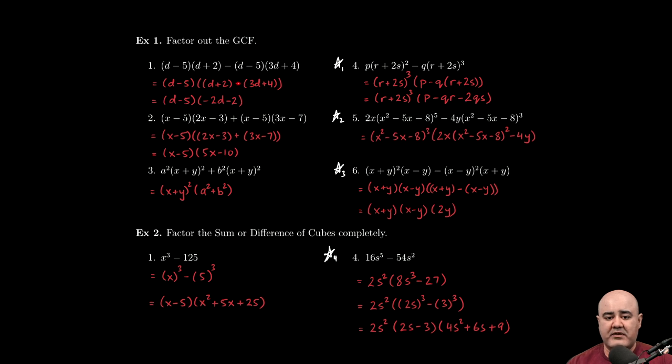Now again, just like we did in the previous problem, we distributed the negative. Here, if we distribute the sum, nothing's really going to change. 2x + 3x will yield 5x. And then -3 - 7 will yield -10. And this is factored. We factored out the GCF. Again, same remark as before. Here, we notice that there's a 5 that's in common as well. So later on, when the question becomes factored completely, you're going to be obligated to and required to factor out the 5 at this stage as well.